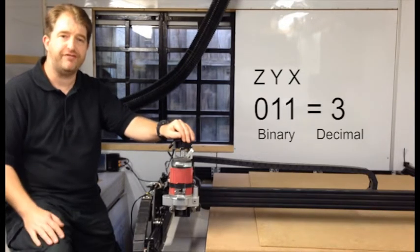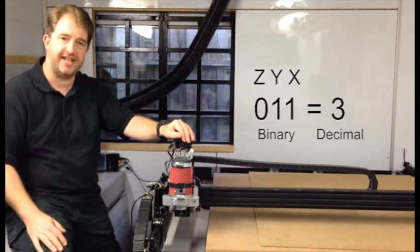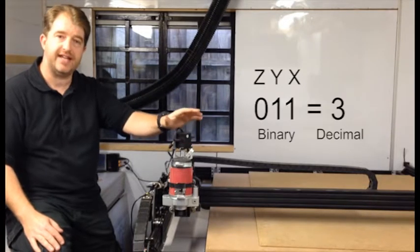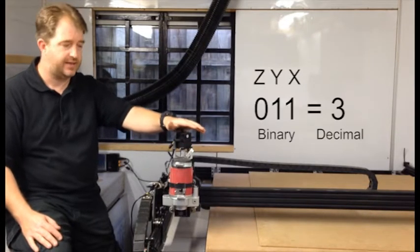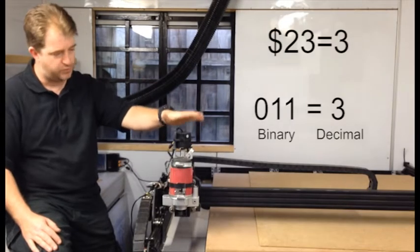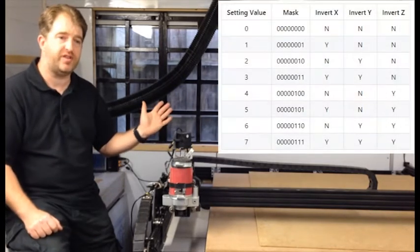So basically converting that 011 of the last three digits into a decimal number, that is a three. So basically my settings are $23 equals 3 and that is where it homes to here. Here is a diagram you can find online, I'll put a link to it in the description.